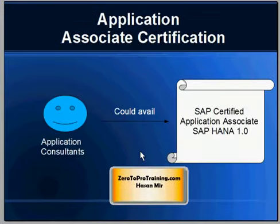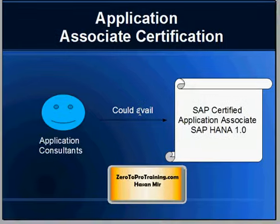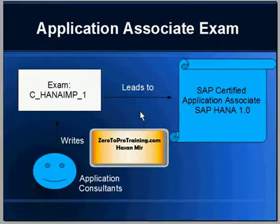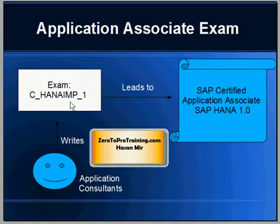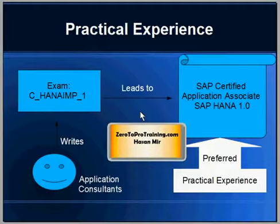Application consultants who are more interested in applied technology could avail SAP Certified Application Associate, SAP HANA 1. This is again an associate level certification standing at the same level as the technical associate, but focused on applied topics rather than core topics. To achieve this certification, you need to write the exam called CHANA IMP 1. Again, you don't have to take courses from SAP — you can take courses from elsewhere, from SAP, or do self-study. All you have to do is write this exam.